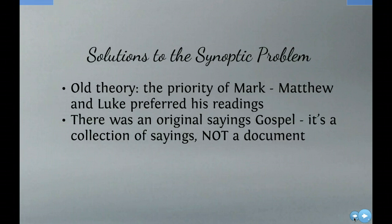On point two - the original sayings gospel Q, from the German Quelle for source - this was the original gospel that Christians spoke to one another, and eventually it formed into Mark, and then it was used by Matthew and Luke. There's a very famous diagram of how this all happened with a bunch of arrows, but what you need to know is that this is one of the solutions to the Synoptic problem. It explains why so much of Mark appears in Matthew and Luke.